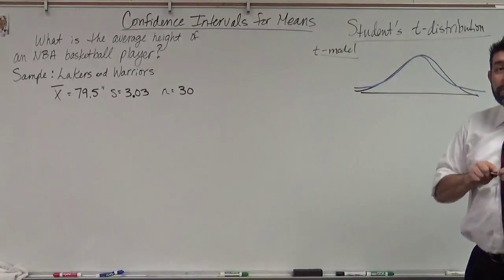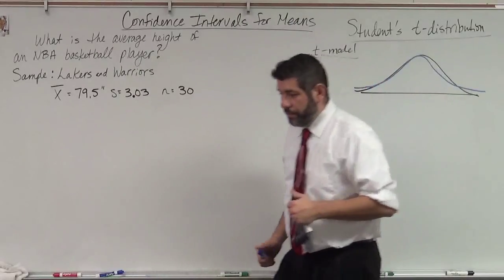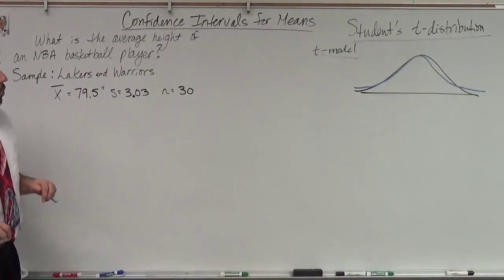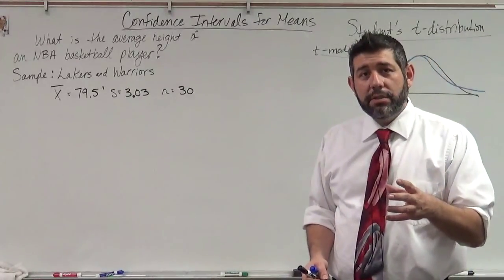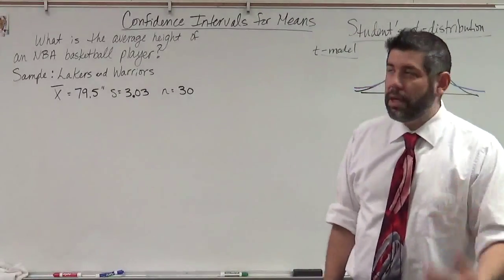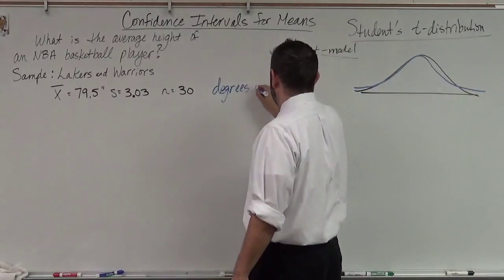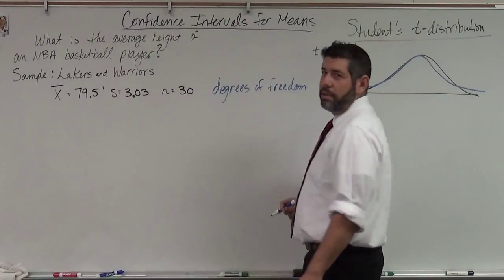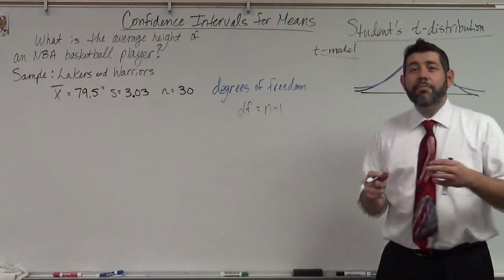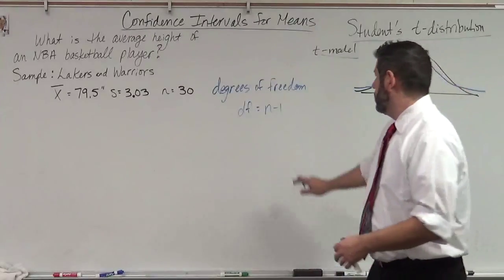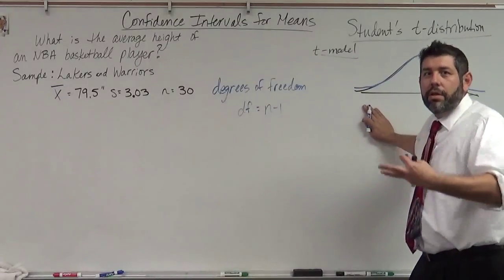We're going to use Student's t-model to do our confidence intervals for means, because our samples might not be that large. What we need to do is pick which t-model to use, because these t-models are different depending on the sample size. We pick using something called the degrees of freedom — degrees of freedom are always n minus 1, my sample size minus 1. The degrees of freedom tell me what type of t-model I'm going to use.